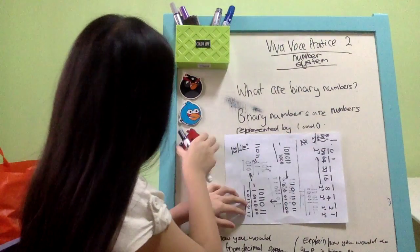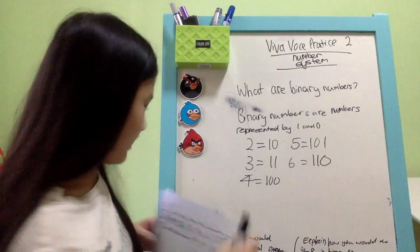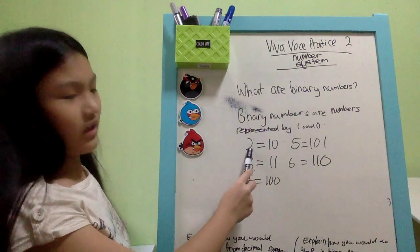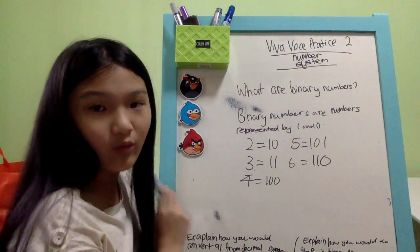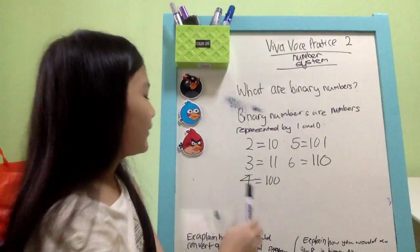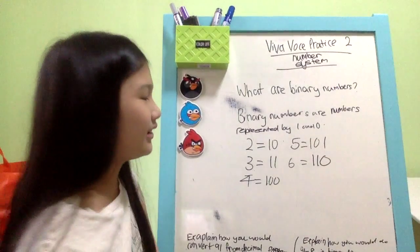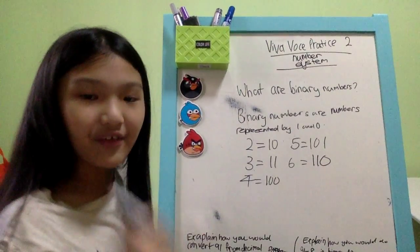What do I mean? I mean by this. Like 2 is 1, 0. 3 is 1, 1. 4 is 1, 0, 0. 5 is 1, 0, 1.